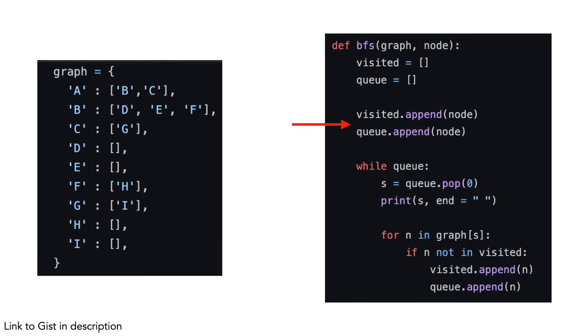We first add the root node to both the visited list and the queue. We loop while the queue is not empty, removing the node that was first added to the queue. We iterate through the adjacent nodes, and if the node has not yet been visited, we add it both to the visited list and the queue.